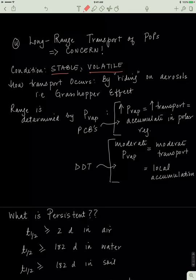Another way this can happen is these particles evaporate and can bind to atmospheric particles called aerosols, like snowflakes or water droplets or clouds. They can bind to them and travel with them to other parts of the globe. This is called the grasshopper effect.